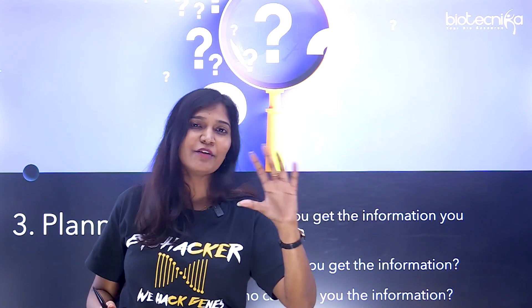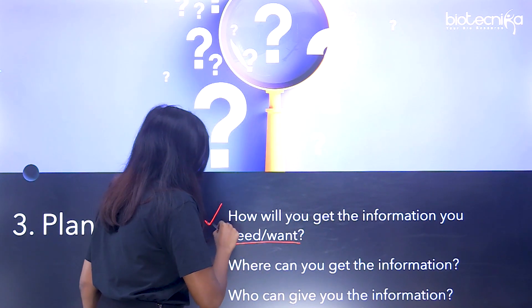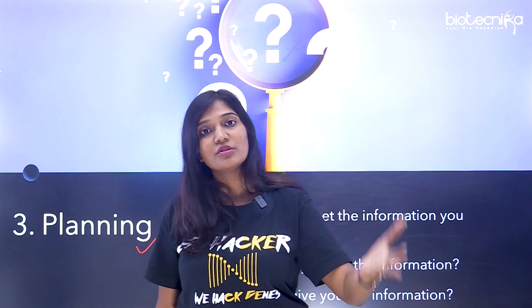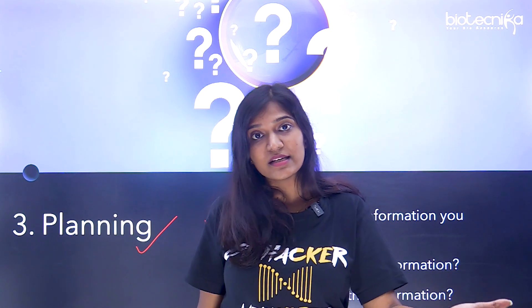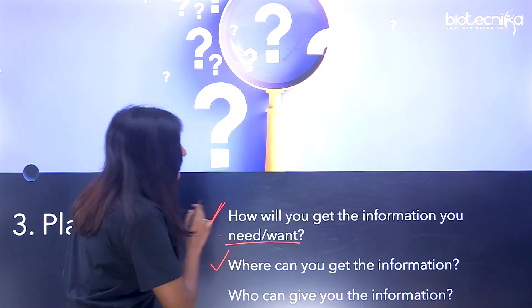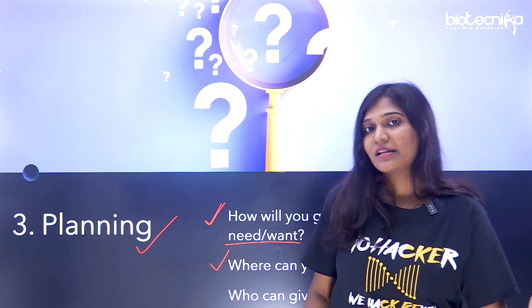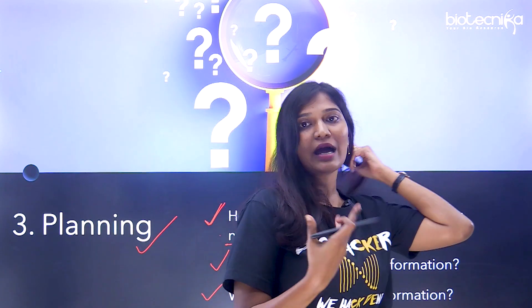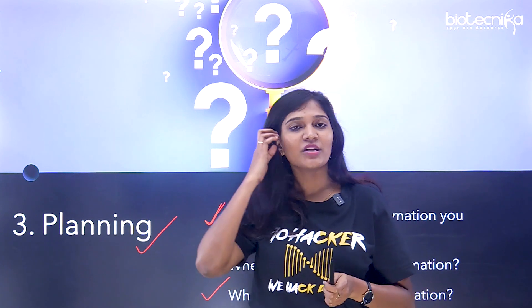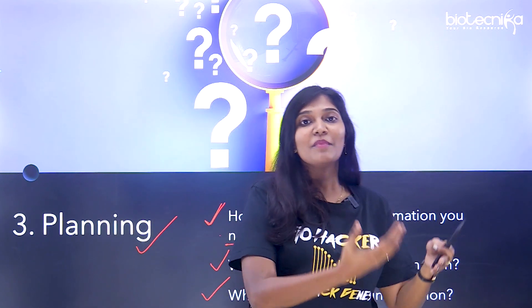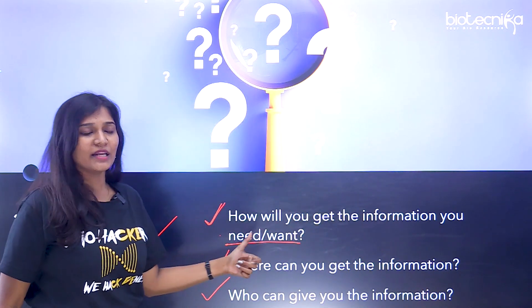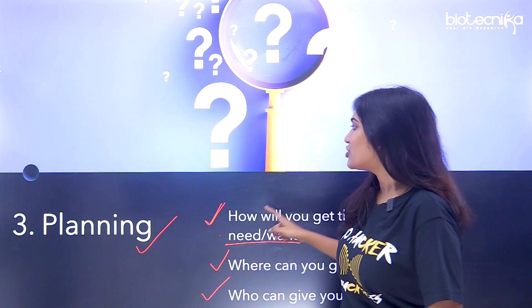What online sources will you use? Will you go to Google Scholar, search research papers, or use other sources? Where can you get the information — which site? Who can give you the information? If you're going to collaborate with researchers who have done a certain project, whether abroad or in India, you can get information by asking them about the project. This is the planning stage — the third research skill checklist.